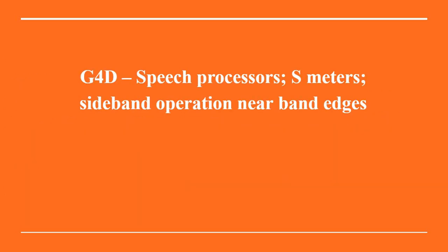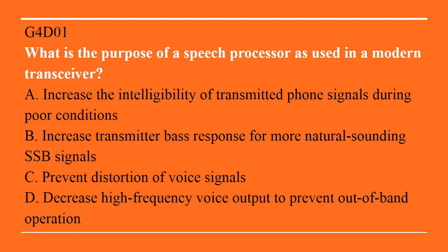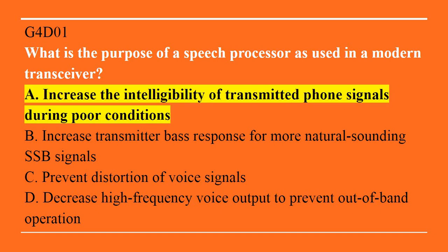G4D covers speech processors, S-meters, and sideband operation near the band edges. G4D01: What is the purpose of a speech processor as used in a modern transceiver? A. Increase the intelligibility of transmitted phone signals during poor conditions. B. Increase transmitter bass response for more natural sounding SSB signals. C. Prevent distortion of voice signals. Or D. Decrease high frequency voice output to prevent out-of-band operation. The correct answer is A. To increase the intelligibility of transmitted phone signals during poor conditions.